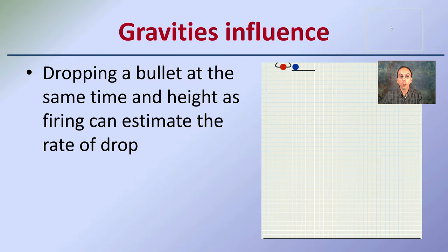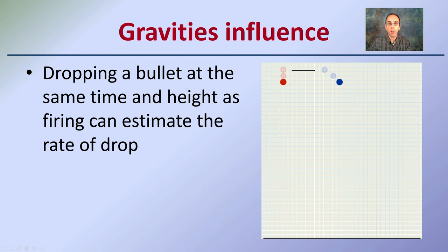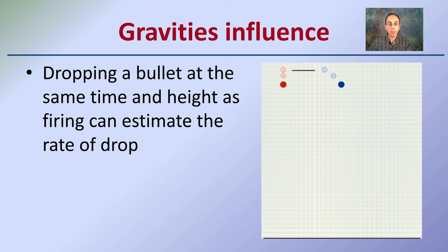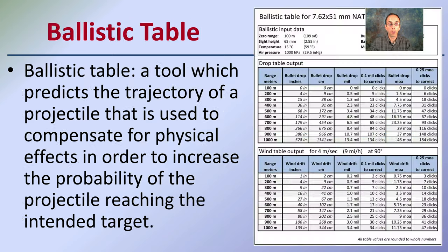Gravity also influences bullet drop. A bullet dropped at the same time as one fired horizontally can demonstrate the rate of drop. Here's one that's being dropped and here's one rolling off a counter — we can see they both impact at the same time. So gravity is the same influence whether a projectile is traveling along its line or simply being dropped in a vertical pattern.